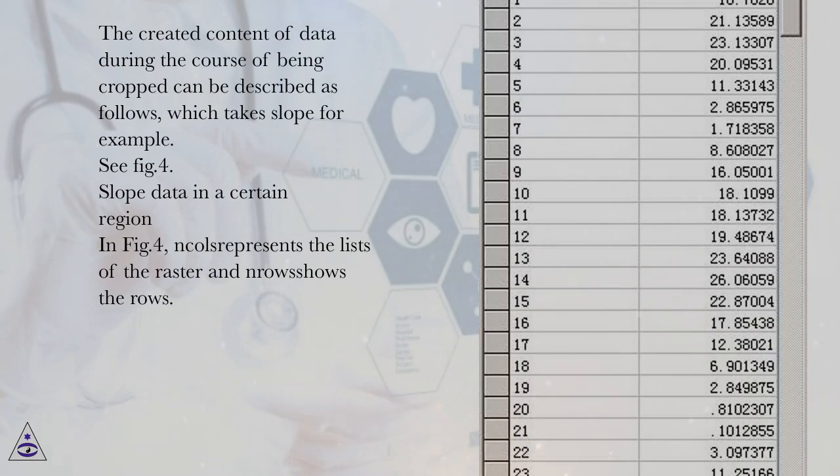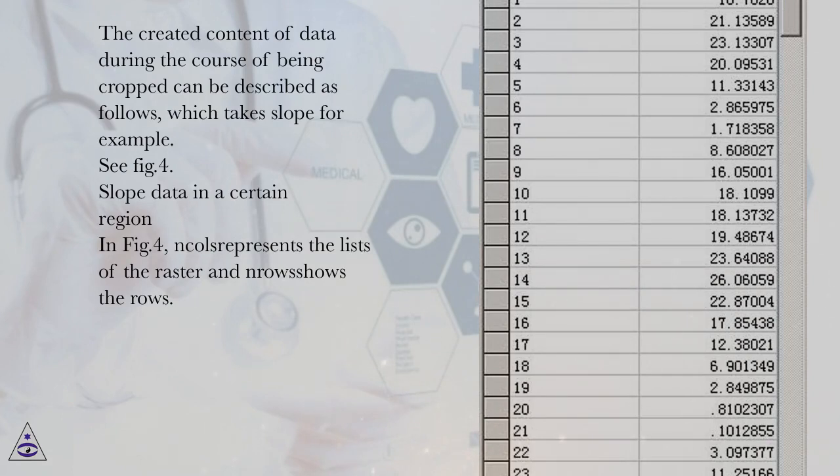Slope data in a certain region. In fig. 4, Nkals represents the list of the raster and row shows the rows. And x11 corner, y11 corner represent respectively the coordinates of left underside corner in the whole raster range. Besides, cell size notes the grid size, which can be expressed in the manner of meter.